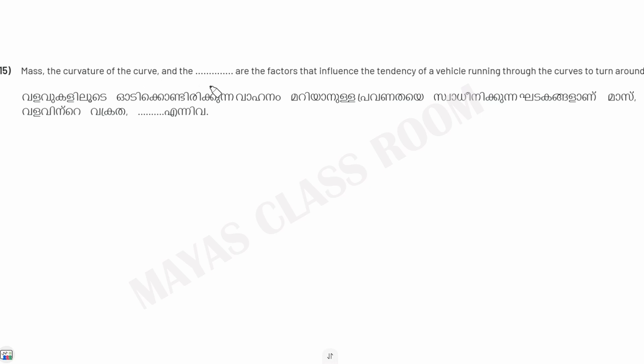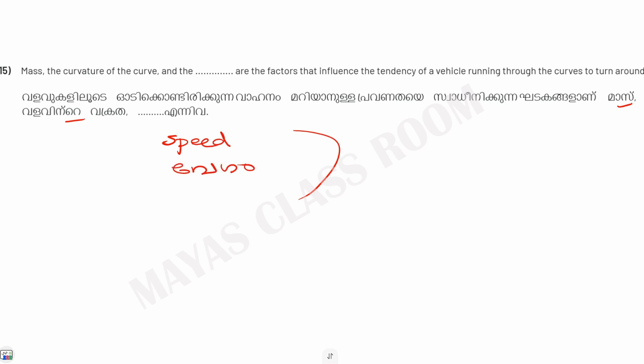The curvature of the curve and the speed are the factors that influence the tendency of a vehicle running through curves to overturn. There are many questions that have already been asked about this topic.